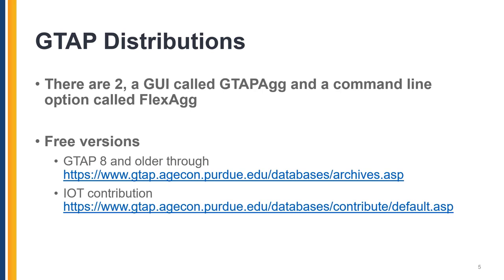Therefore, there are two types of distributions that help you aggregate the world economy to really focus on the problem at hand that a researcher may have. One such distribution is GTAP-AG, a graphical user interface that works with Windows, and a command-line option called Flex-AG. You should know that there are free versions available on our website. In our archives you will find GTAP 8 data and older, and also if you wanted to get access to a more recent version you could choose to contribute an input-output table and follow the guidelines specified here.